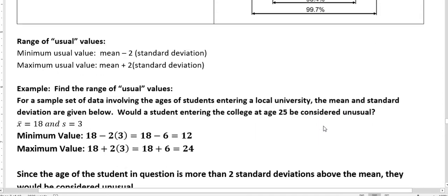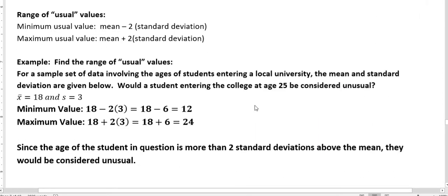So the kind of questions you might be asked is like this one: Find the range of usual values for a sample set of data involving the ages of students entering a local university. The mean and standard deviation are given below. Would a student entering the college at age 25 be considered unusual?